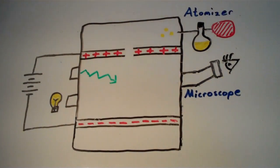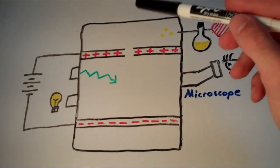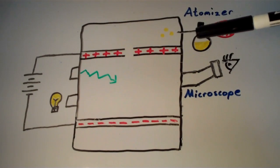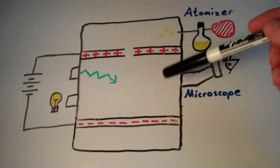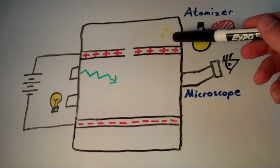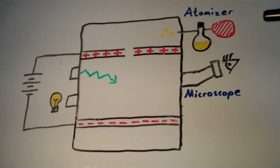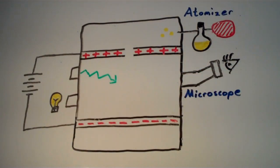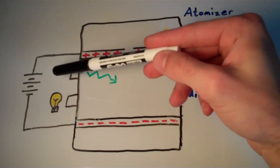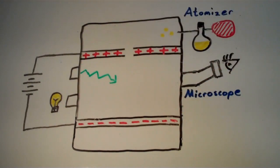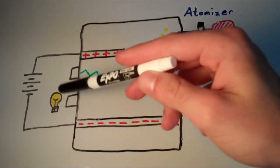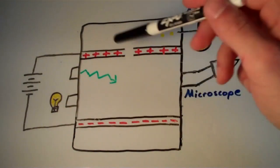So the atomizer shoots out these little droplets of oil and there's a small hole here that allows the droplets to fall down into the lower part of the apparatus. And the upper and lower parts of the apparatus are separated by positively and negatively charged plates. So up here is the positively charged plate and down here is the negatively charged plate. And these two plates are connected by a power source in which you can actually change the voltage of the power source.